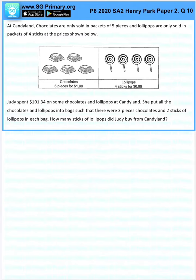Judy spent $101.34 on some chocolates and lollipops at Candyland. She put all the chocolates and lollipops into bags such that there were 3 pieces of chocolates and 2 sticks of lollipops in each bag. How many sticks of lollipops did Judy buy from Candyland?